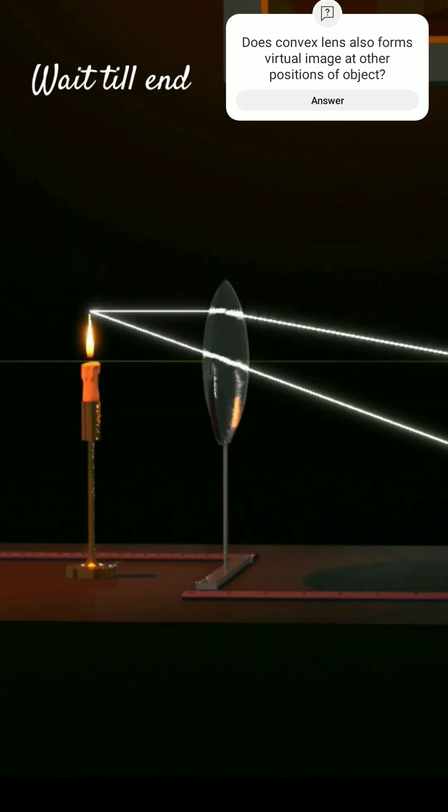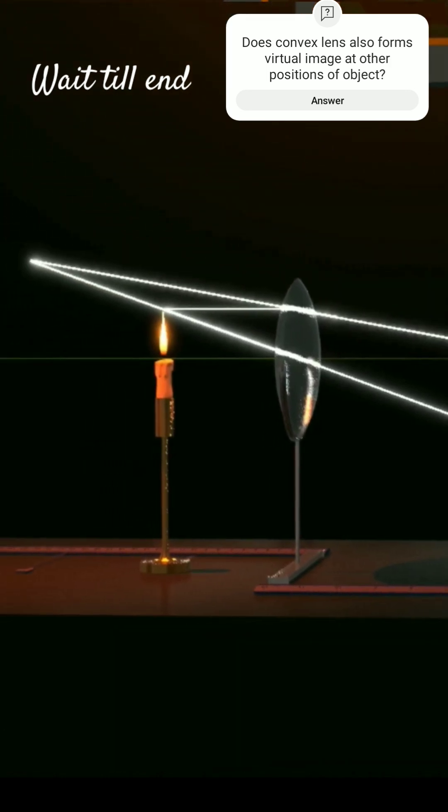Both the incident rays after refraction through lens diverge from each other. They never meet on that side. When they are produced backward, they intersect each other to form the virtual image.